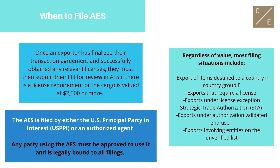We will discuss when to file the AES. Once an exporter has finalized their transaction agreement and successfully obtained any relevant licenses, they must submit their EEI for review in AES if there is a license requirement or the cargo is valued at $2,500 or more. Regardless of value, most filing situations include: exports of items destined to a country in Country Group E; exports that require a license; exports under license exception Strategic Trade Authorization, STA; exports under authorization Validated End User; and exports involving entities on the Unverified List. It is important to check all lists for any individuals or entities that may be blocked from export transactions, as performing business with them would prompt the need for a license. Each regulatory agency has sets of lists, but all lists can be checked at once using the consolidated screening list, which is managed by BIS.